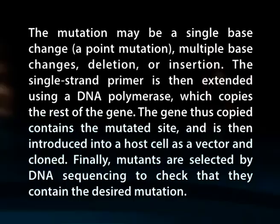The basic procedure requires the synthesis of a short DNA primer. This synthetic primer contains the desired mutation and is complementary to the template DNA around the mutagenesis site, so it can hybridize with the DNA having the gene of interest. The mutation may be a single base change (a point mutation), multiple base changes, a deletion or insertion. The single-strand primer is then extended using a DNA polymerase which copies the rest of the gene. The gene thus copied contains the mutated site and is then introduced into a host cell as a vector. Finally, mutants are selected by DNA sequencing to check that they contain the desired mutation.